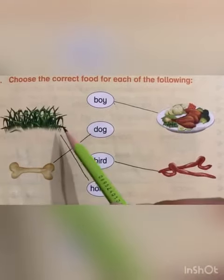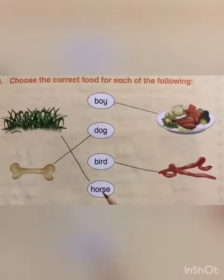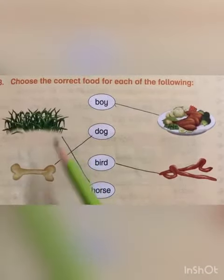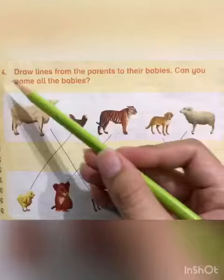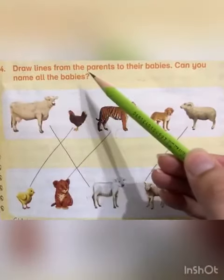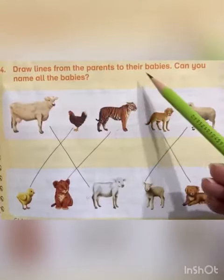Horse eats grass, so we'll mark a line between horse and grass. For question number four, draw lines from the parents to their babies.